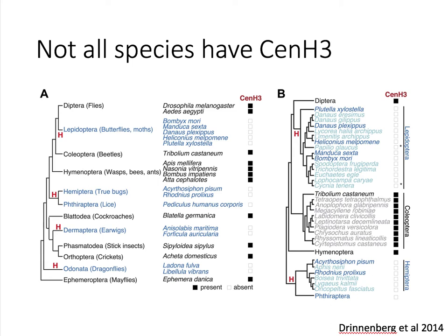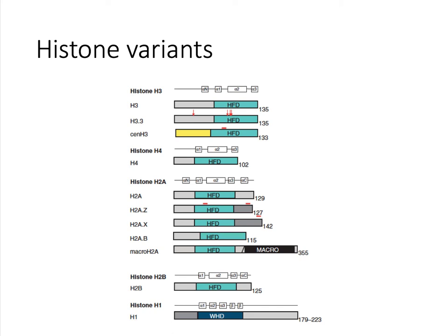The species that don't have CenH3 are insects, and most of them have holocentric chromosomes. So we've talked about H3.3, H2AZ, and CenH3. There are a number of other histone variants, but most of them have very specialized functions. Many of them have functions in the germline or with the sex chromosomes, such as macro H2A in mammals, which binds to the inactive X chromosome. They are a very interesting set of proteins, but they are not very well studied.